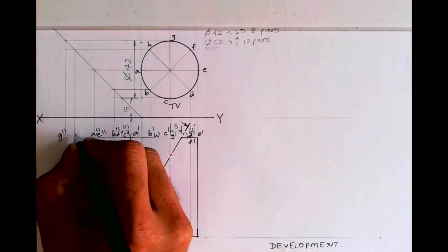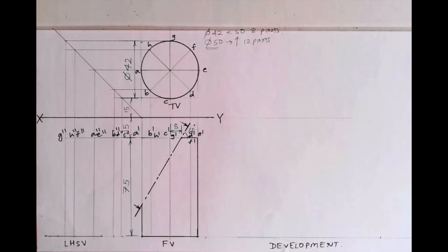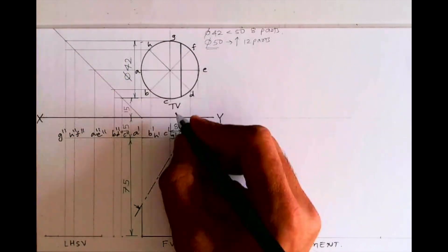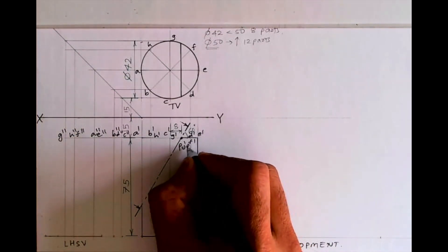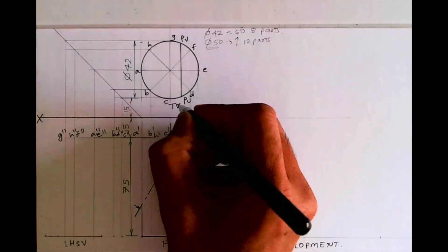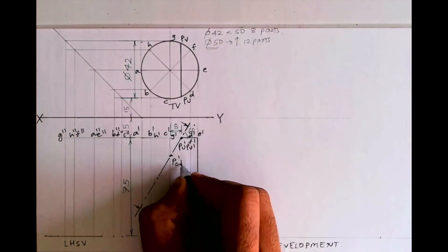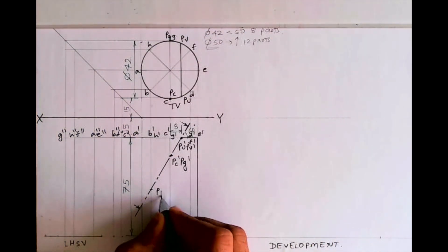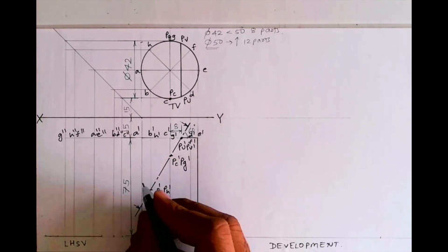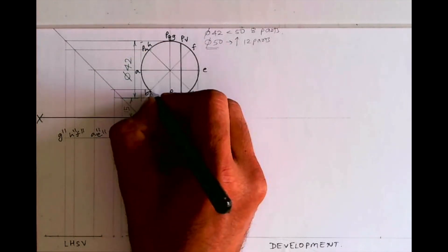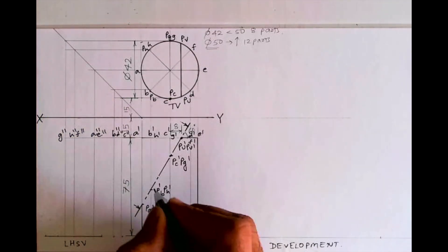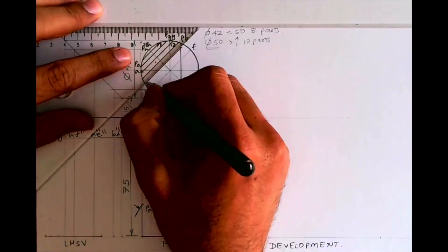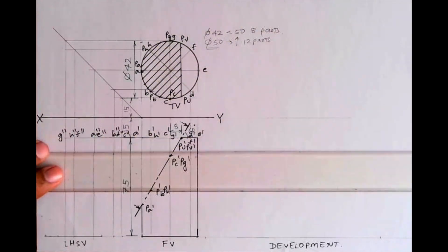We are done with the labeling. Now, when you cut the top surface, you get cut points. See here: pu-dash and pv-dash, pc-dash, pg-dash, pb-dash, ph-dash, pa-dash. I can draw the section like this. So we are done with the sectional top view.